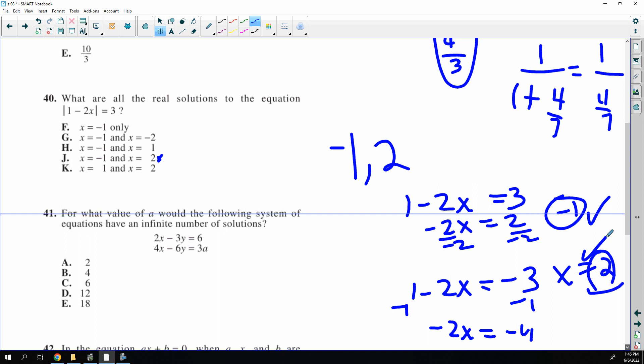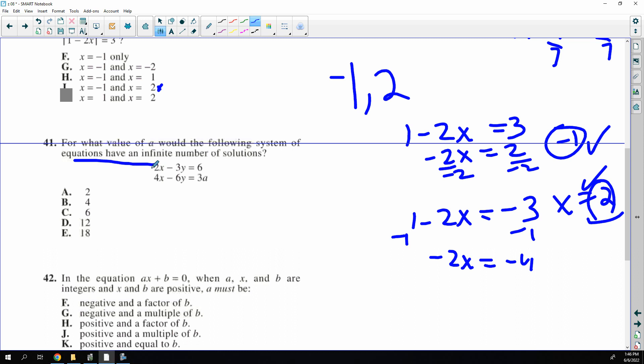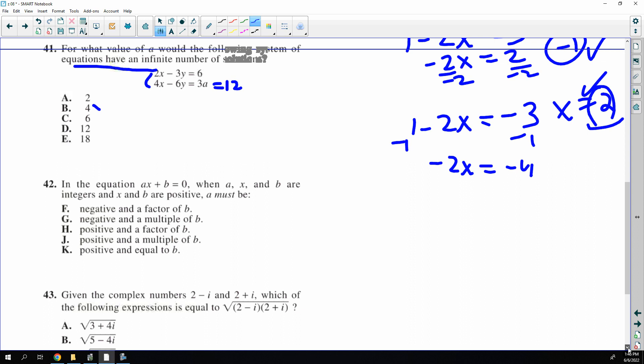This is another one. There's a few on this test that I hadn't seen in years. For these to be infinite solutions, they've got to be the same number times. So this is times 2. This is times 2. So this has to say 12. And for 3a to be 12, wouldn't a have to be 4?